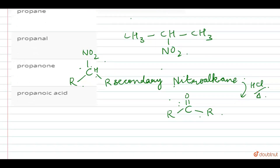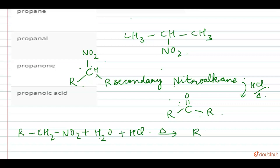Whereas the primary nitroalkane, which is R-CH2NO2, on reaction with H2O in the presence of HCl and heating gives a carboxylic acid along with NH2OH plus HCl.